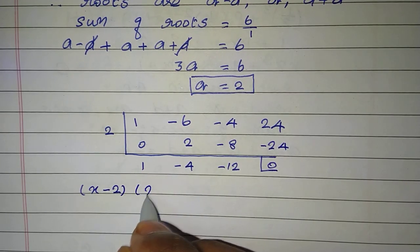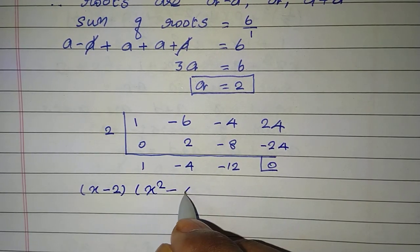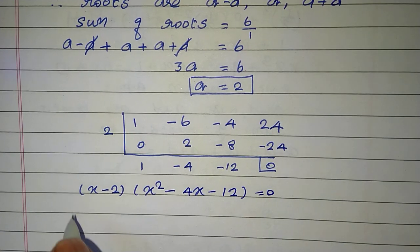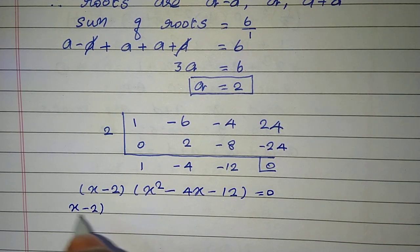After dividing by x minus 2, we get x square minus 4x minus 12 equal to 0.